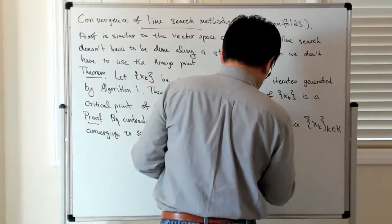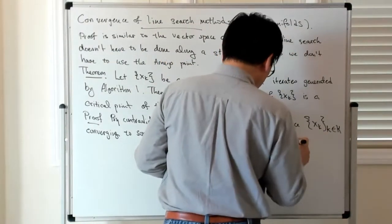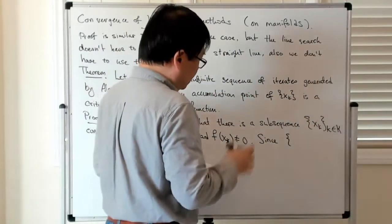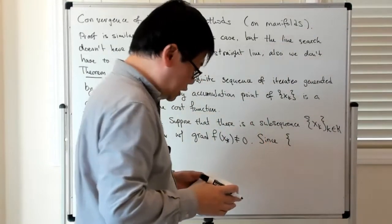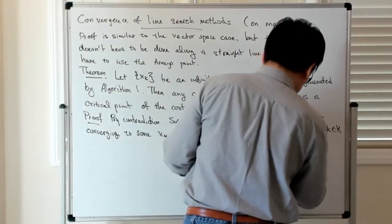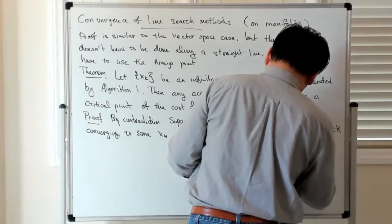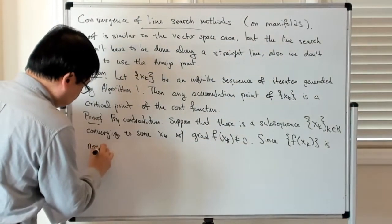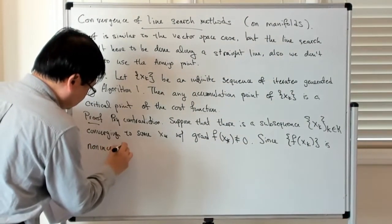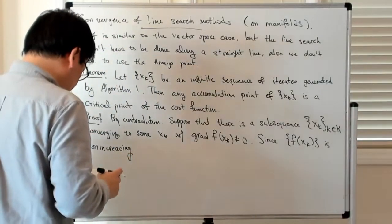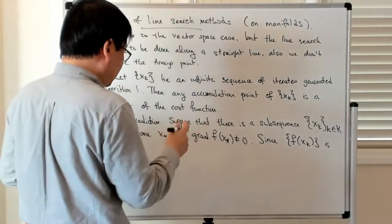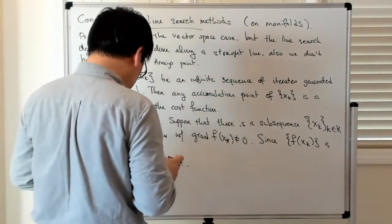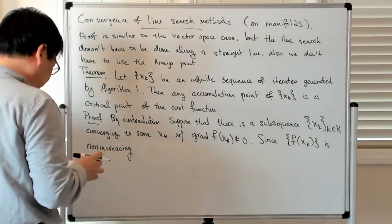So since by construction of this line search algorithm, the function values on these iterates are non-increasing — since f of x_k is non-increasing — it follows that not just a subsequence but really the whole sequence converges to f of x-star.